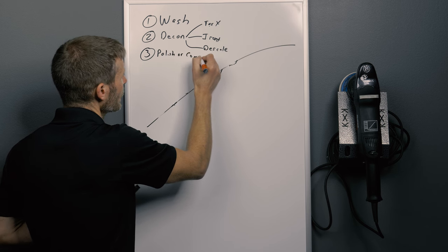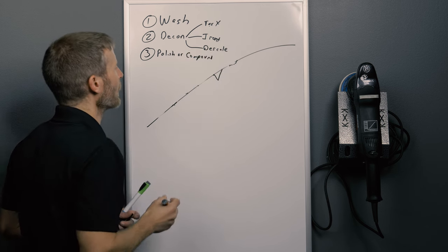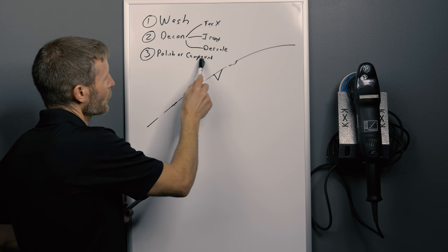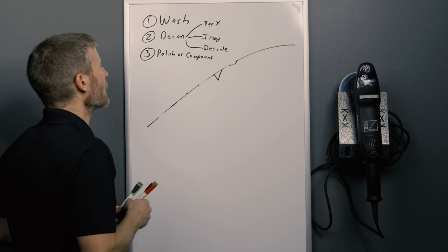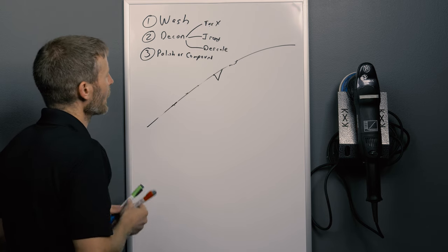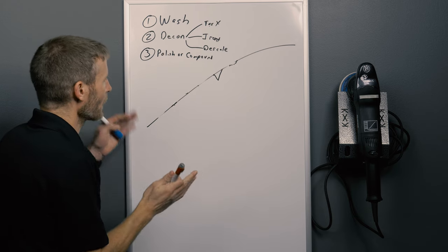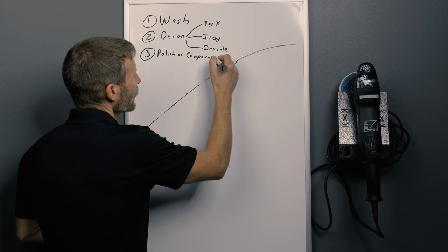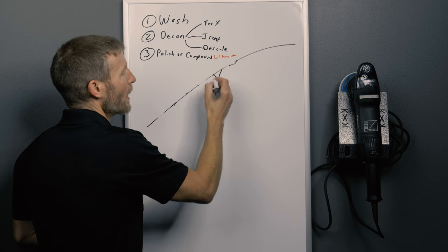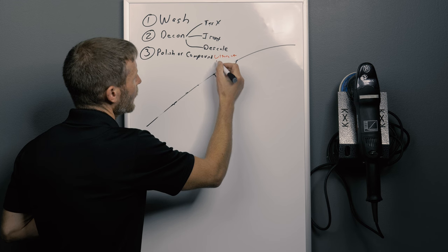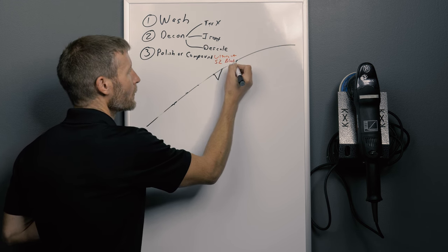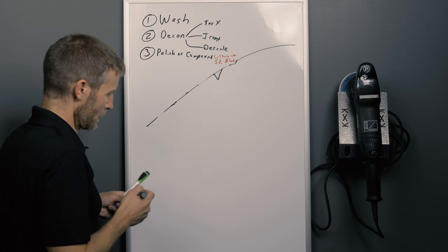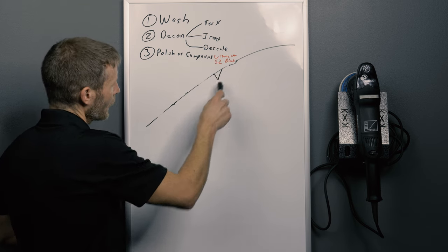Polish or compound. If you're going to try to remove some deeper things, then you're going to use a heavier cut polish, which in the USA people usually refer to as a compound. It's six one, half dozen the other, it's really could be used interchangeably, but people usually think of compound as a heavier aggressive and a polish as a less aggressive. So at this point we're going to use something like CarPro UltraCut if we're trying to compound heavy, or like Scholl Concepts S2 Black, something like that.